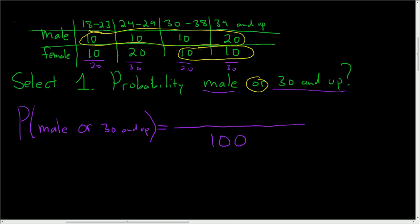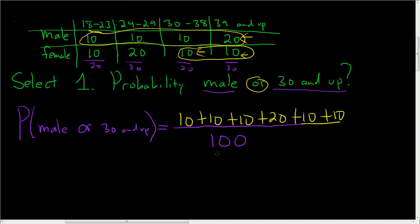Then we just add: 10 plus 10 plus 10 plus 20, and then we still have these 10s down here. So we had 100, it's everything except 30, so 70. The circling and adding works — 10 plus 10 plus 10 is 30, then 50, then 70. So 70 over 100, which is 0.70.